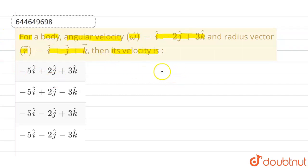Now we know a relation which relates velocity vector, the radius vector and angular velocity vector. And this relation is given by v vector equals omega vector cross r vector.